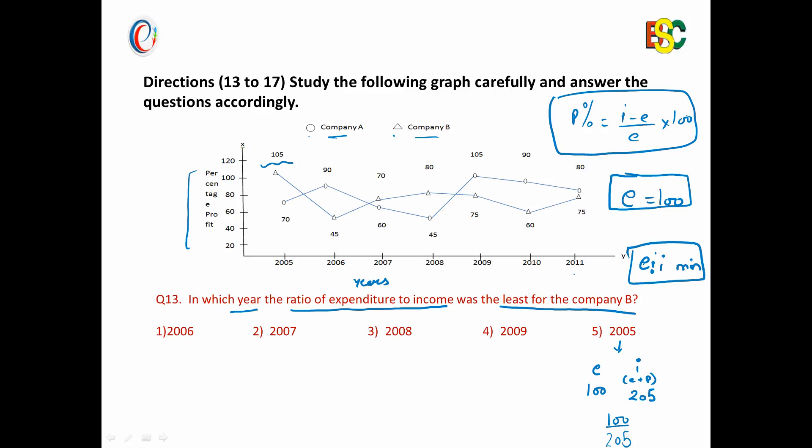Now if we go to year 2006, here again we assume expenditure as 100, and as profit percentage is 45, so profit will be 45 and income will be 100 plus 45, that is 145. And our ratio would be 100 upon 145. Now in this way we can calculate the ratio for all the years.